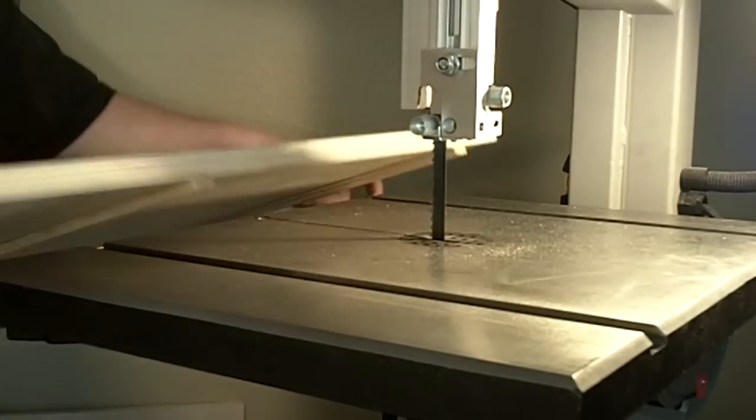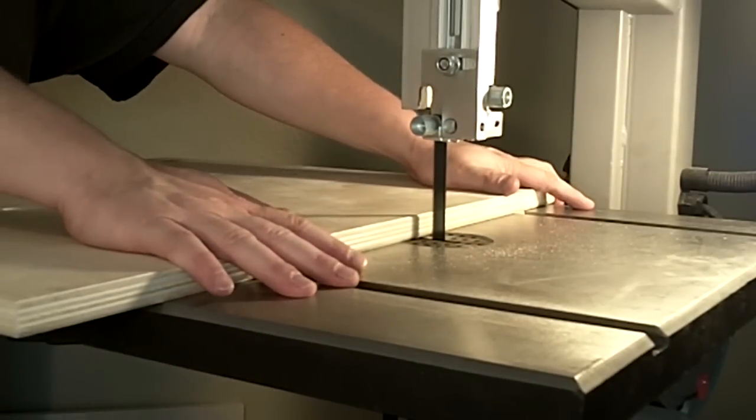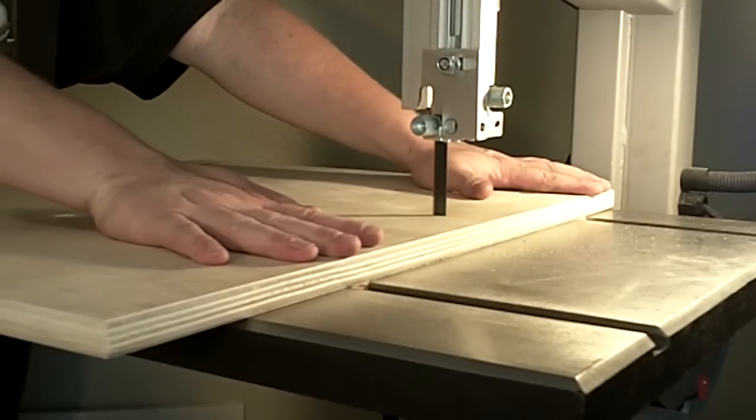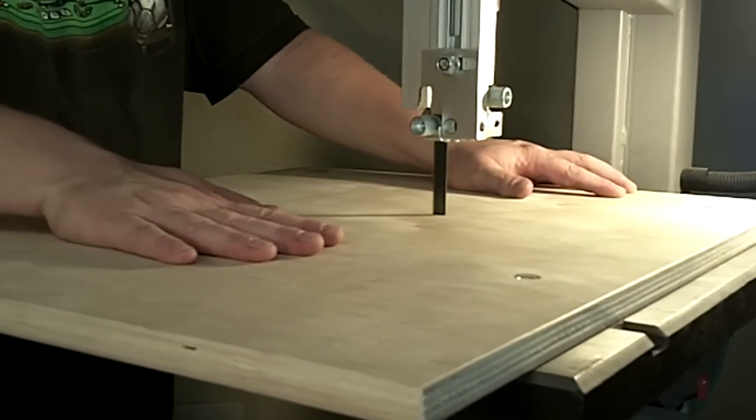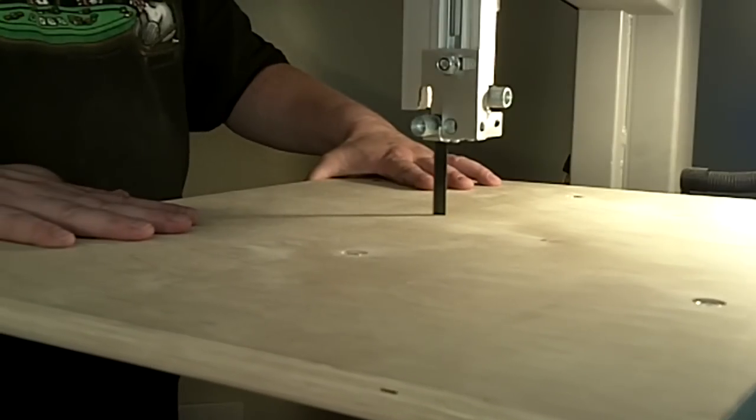The next step of cutting the slot couldn't be simpler. Just reinstall the blade and adjust it. Lower the guide down and then run the sled slowly through. Be sure you stop three-fourths of the way through. You don't want to cut all the way through. We're going to use this slot to set the brace up at a perfect 90 degrees.